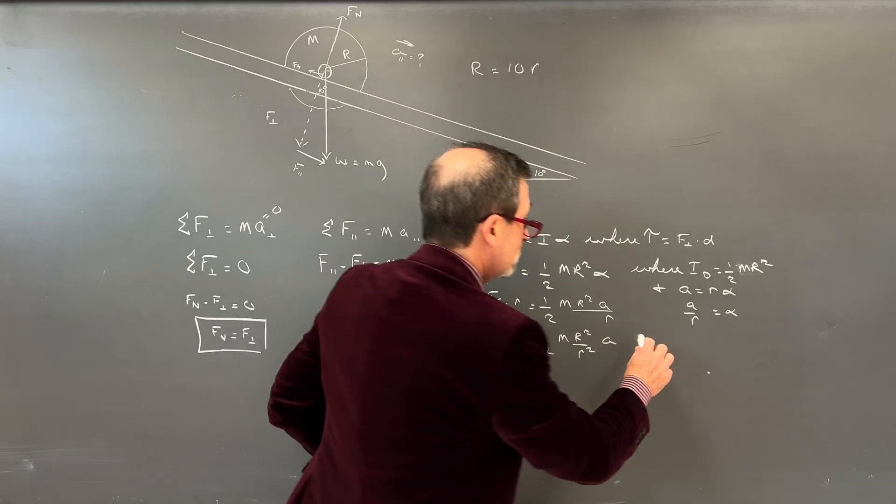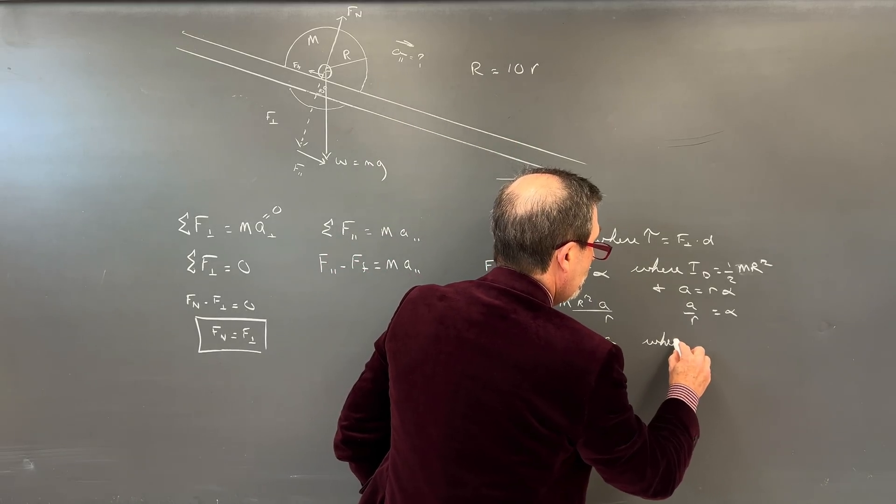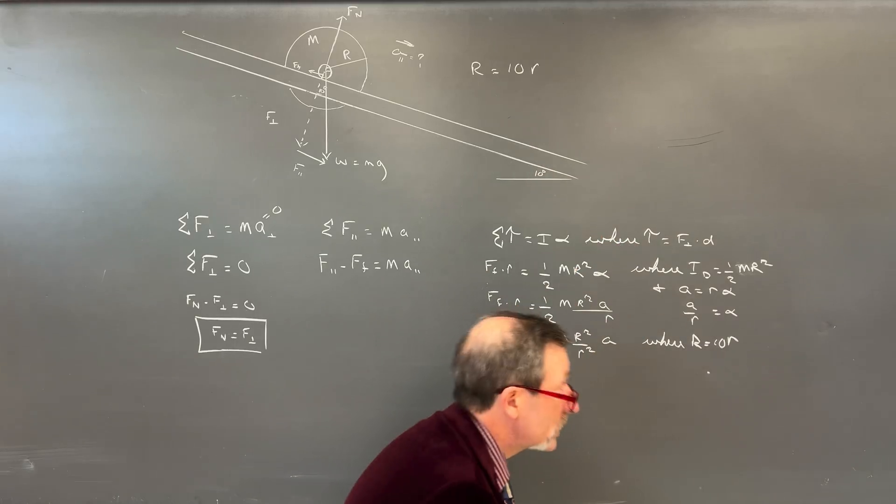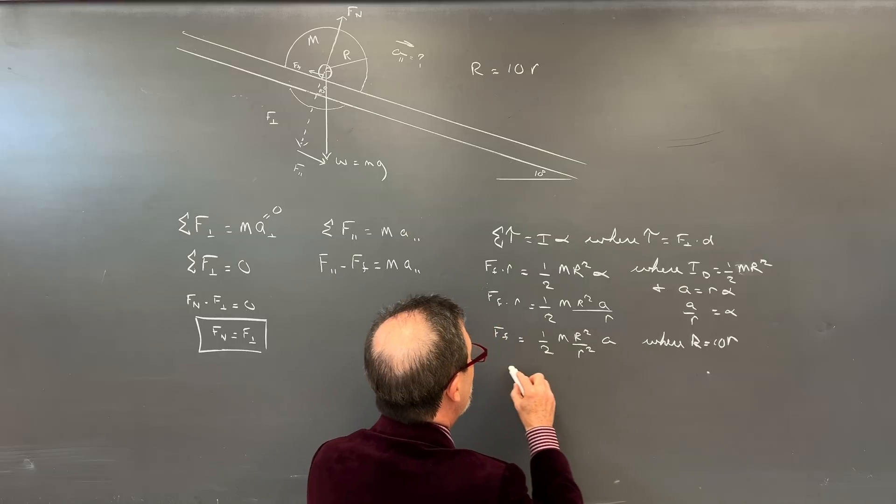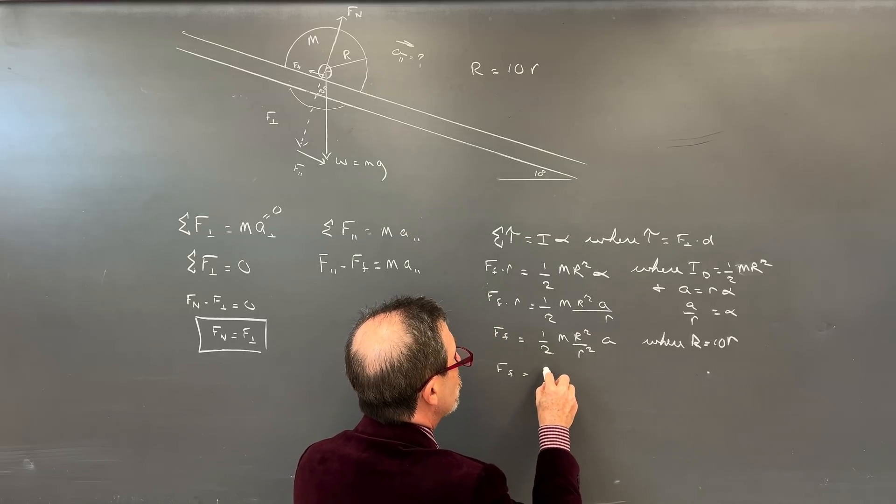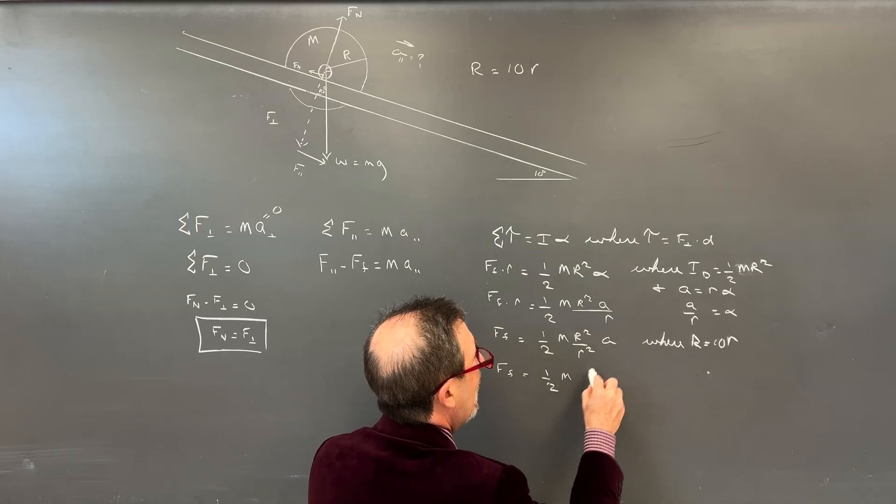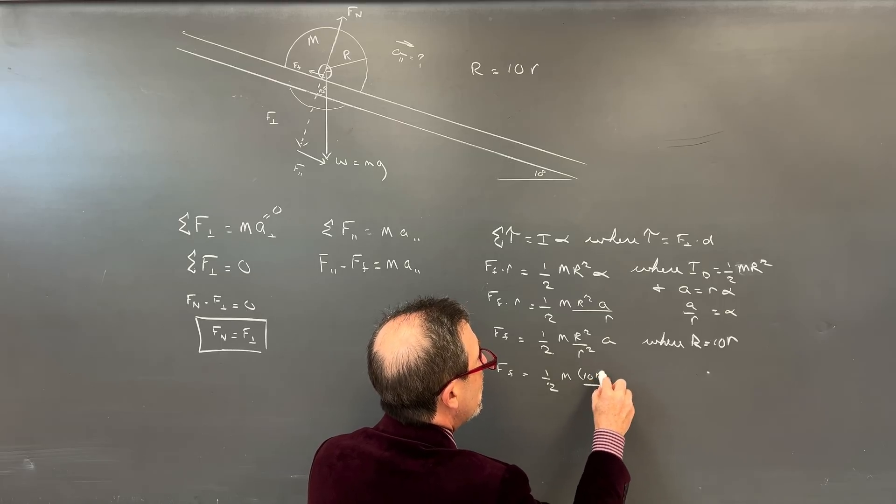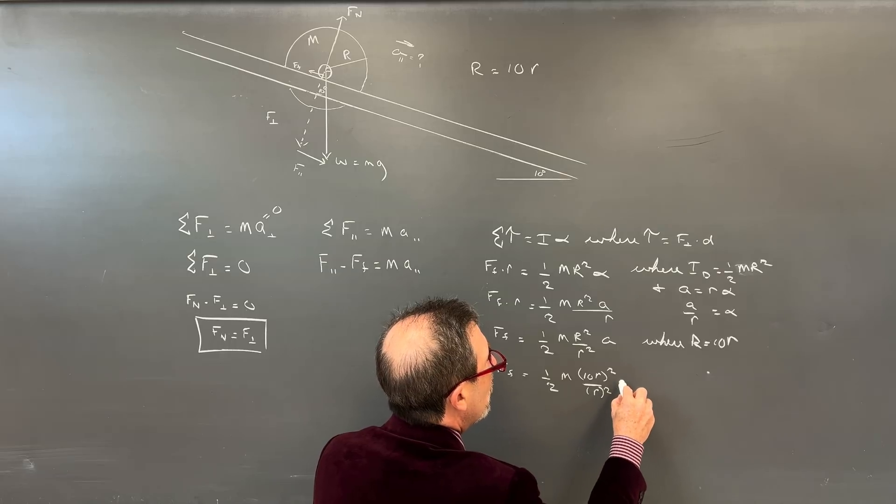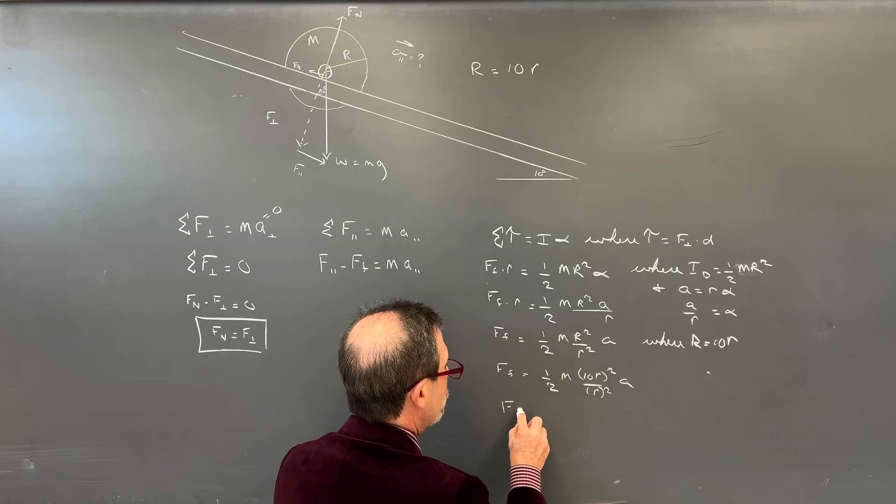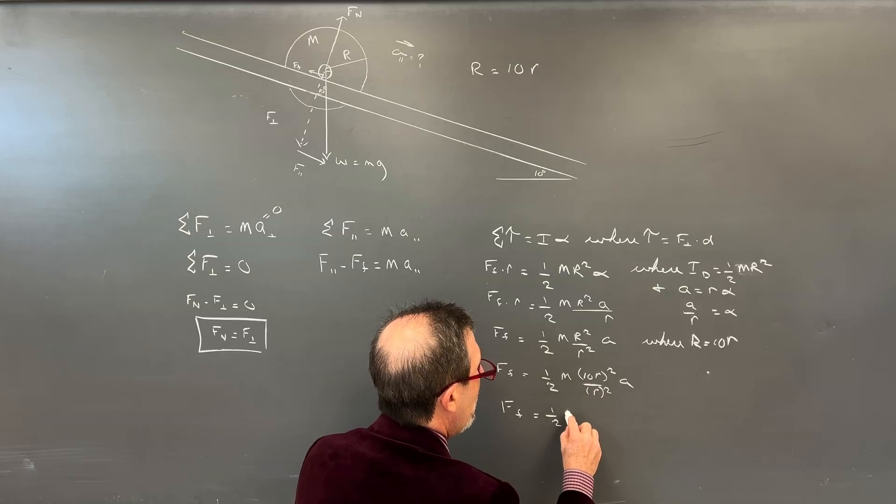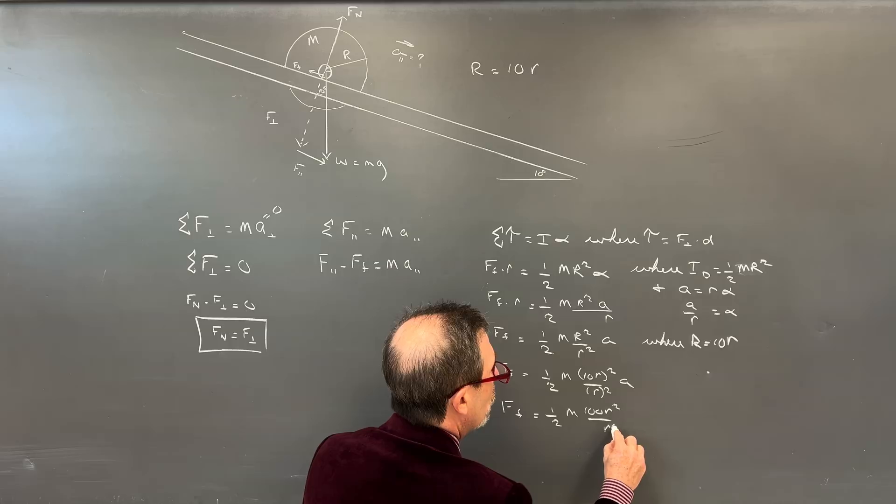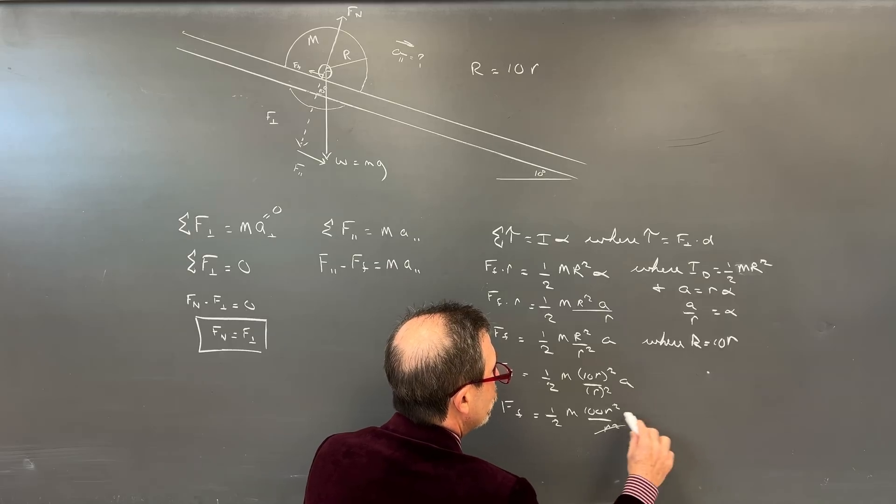But where it actually touches and rolls is going to be dependent upon our smaller r. So we're going to need to say our force of friction times our r equals 1 half M. We've got our r squared. That is supposed to be a capital R squared for our inertia.